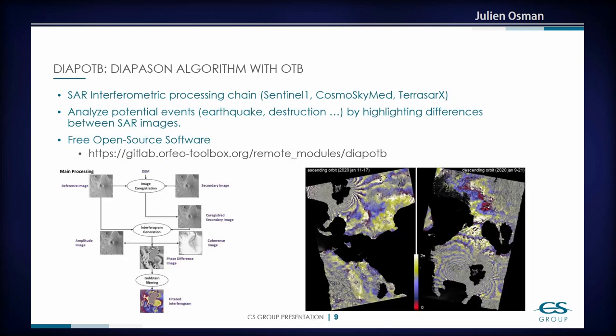For people working with SAR products, I will now present two remote modules dedicated to SAR products. The first one is DiapOTB, which is an implementation of the Diapason algorithm using Orfeo Toolbox. Diapason was designed by CNES and it's aimed at highlighting changes in SAR images. So if you have two SAR images at different dates, you will be able to do some change detection and assess, for example, the effect of an earthquake or flood on the images. It's also a free and open source software that you can find on the GitLab of Orfeo Toolbox.